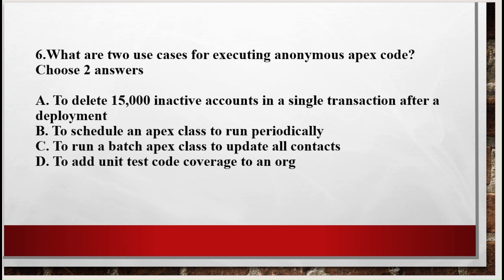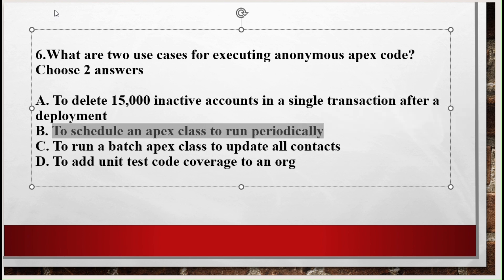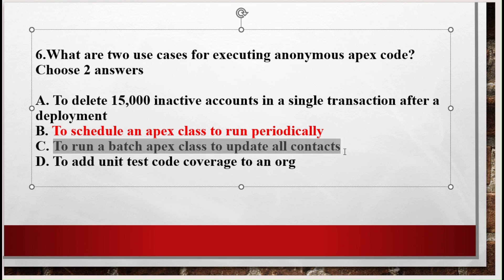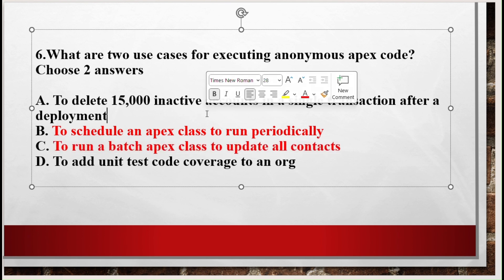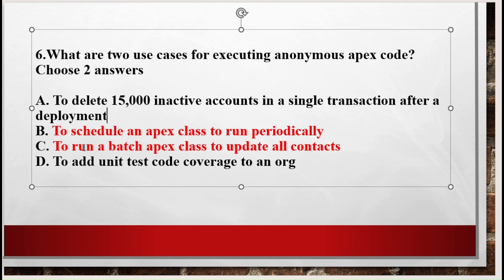Question number six: what are two use cases for executing anonymous Apex code? Choose two options. Option A - to delete 15,000 inactive accounts in a single transaction after a deployment. Option B - to schedule an Apex class to run periodically. Option C - to run a batch Apex class to update all contacts. The correct options for question number six are two of these options.